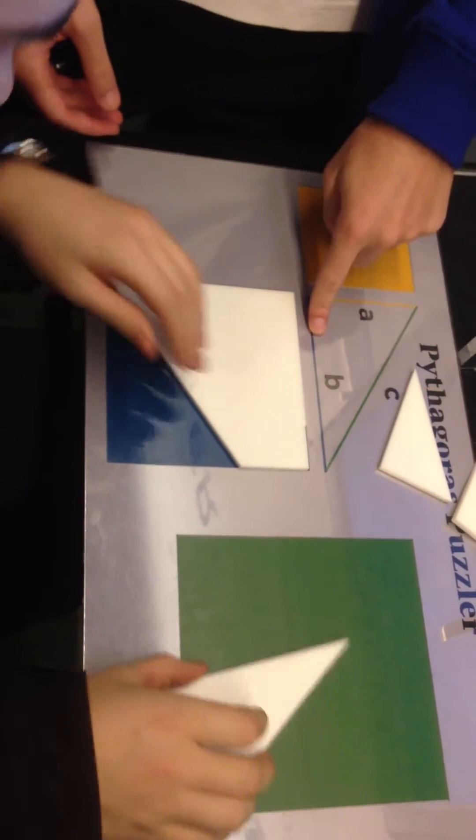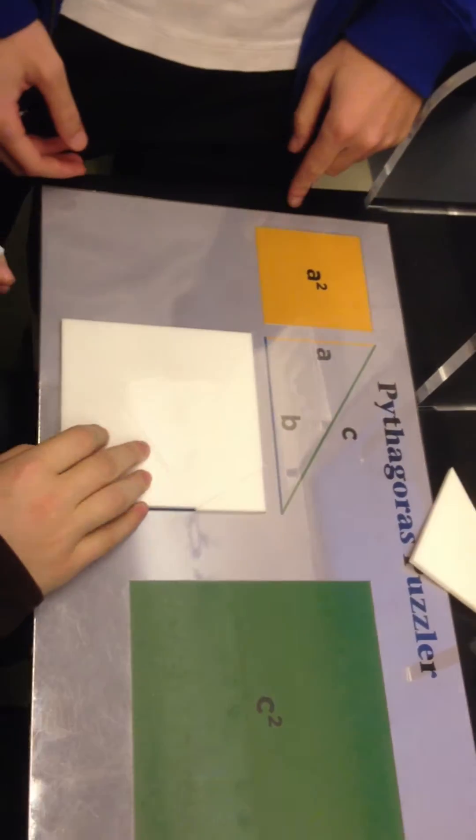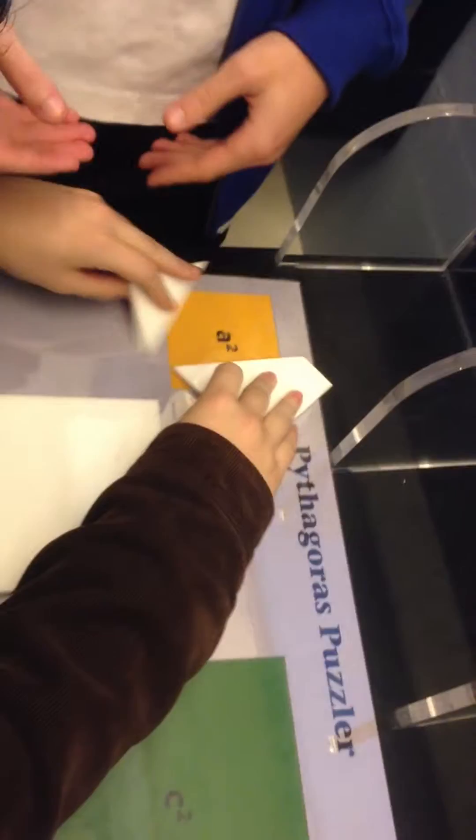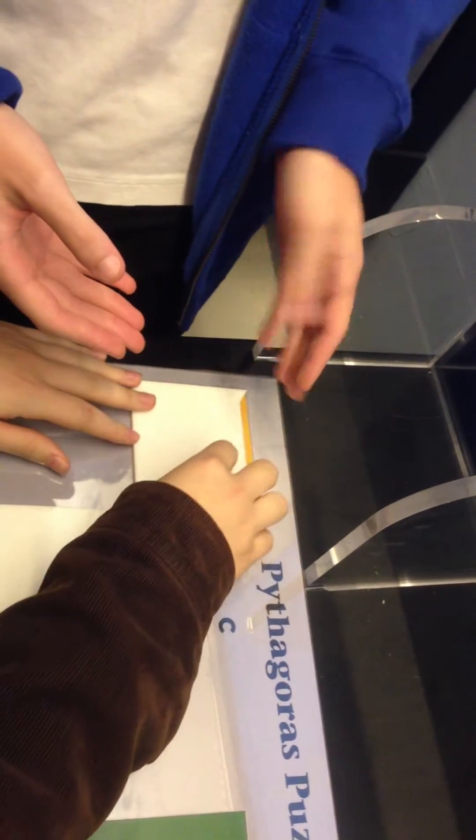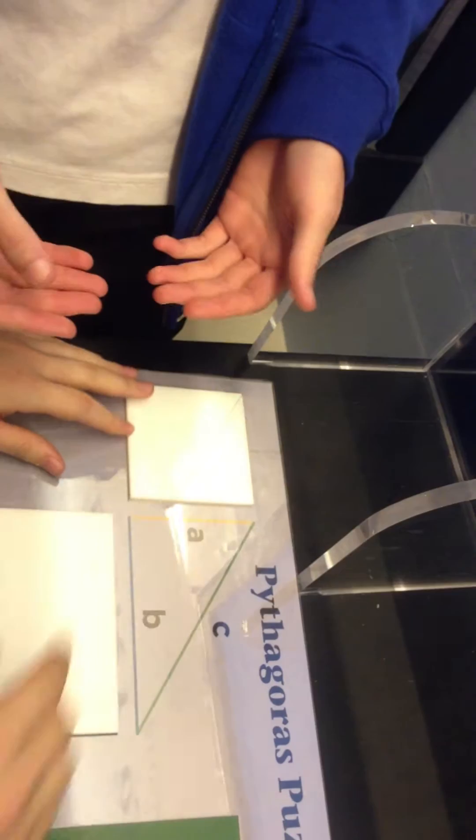First he's building the b-squared triangle, or b-squared square. This is what he built, now the a-squared square. Once again, okay almost, no spatial dimensions.